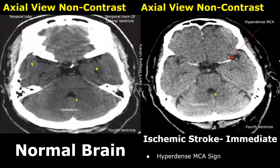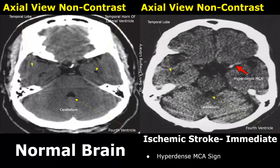these are images of the brain at the level of the cerebellum. This is the cerebellum; this is the fourth ventricle. These two lobes are the temporal lobes. The location of the middle cerebral artery is at this point. In this image of ischemic stroke, we can see a hyperdense MCA. The middle cerebral artery is the most common artery involved in stroke.